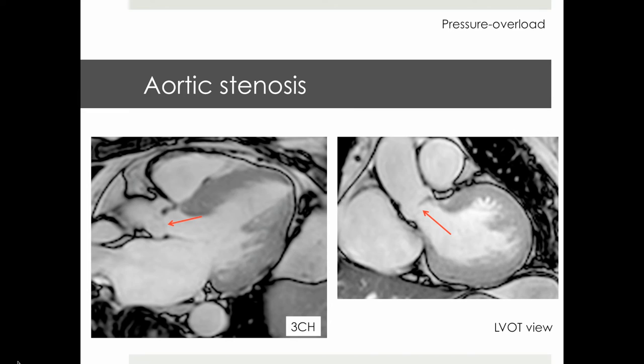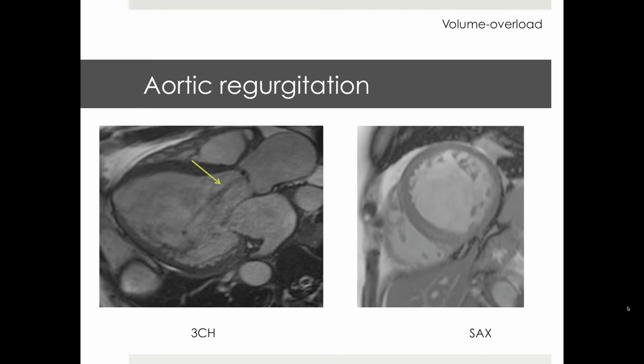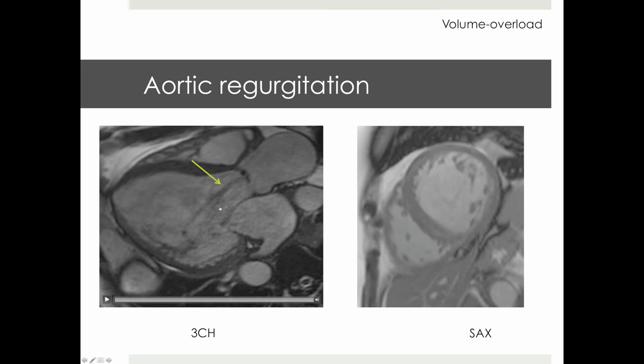And here is an example of a volume overload condition — aortic regurgitation — which is primarily characterized by an increase in LV diameter, with a consequent stretch in the LV, leading to an increase in LV volumes as well as LV mass.